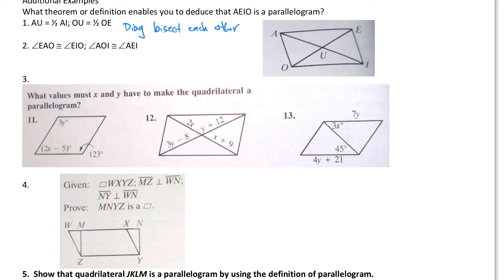If I know that angle EAO is congruent to angle EIO, and I know that angle AOI is congruent to angle AEI, this is opposite angles congruent.